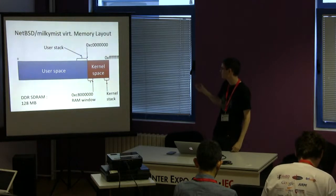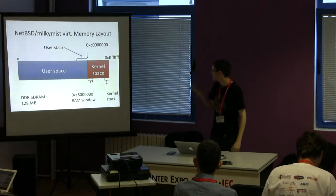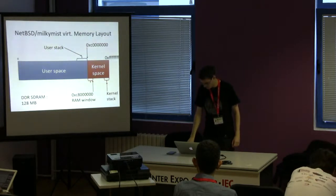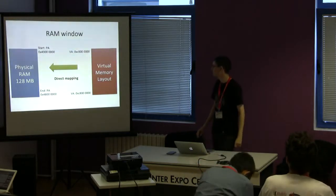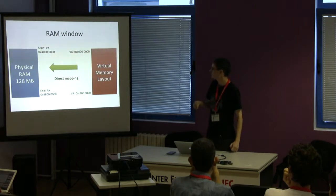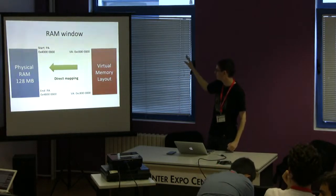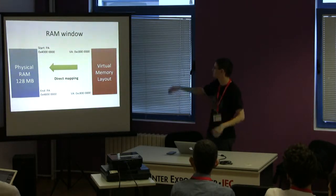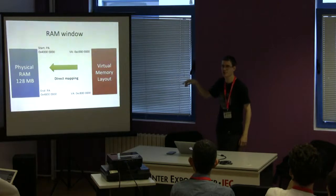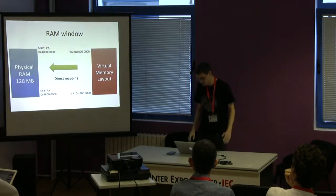On the Milky Mist board there is only 128 MB of RAM, and one gigabyte is reserved for kernel space. The interesting thing is the RAM window. All physical RAM has been mapped into this RAM window in the kernel address space. Physical RAM starts at physical address 0x40000000, and the beginning of kernel virtual memory — from 0xC0000000 to 0xC8000000 — is a direct mapping to physical RAM. So using those virtual addresses you can access all physical RAM directly.